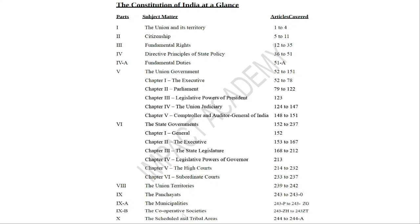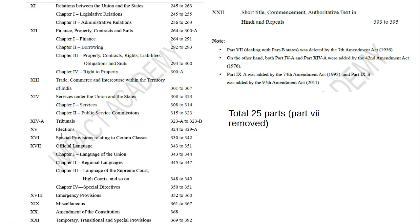Part 9 is Panchayats. Part 9A is Municipalities. Part 9B is Cooperative Societies — this is relatively new. Part 15 is Elections — try to remember, because elections are very near. Article 324 is very important; it deals with the Election Commission, stating that the conduct of elections will be under the supervision of an Election Commission. Part 18 is Emergency Provisions — Article 352 is National Emergency, Article 356 is President's Rule, and Article 360 is Financial Emergency. All these parts are very important.